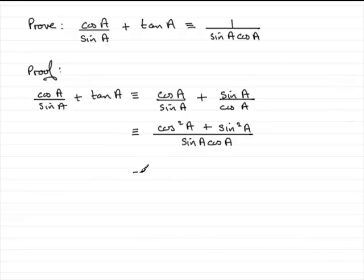Now, what do we notice on the top? Well, we've got what we already know is a familiar identity. Cos squared A plus sine squared A is always identical to one.